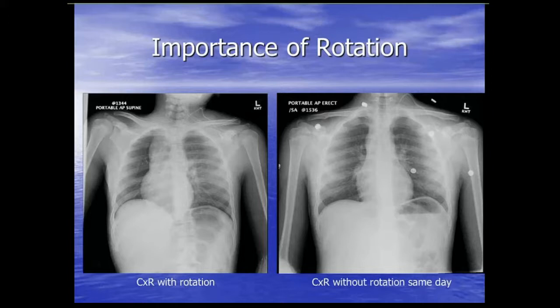The importance of patient rotation. A patient had a left-sided central venous line placed. The patient was a little bit tilted, so the heart looked funny and the mediastinum looked widened — a mediastinal hemorrhage was questioned. But we thought it was most likely due to rotation. A chest radiograph a few hours later on the same day looked fine, and the line was in good position.